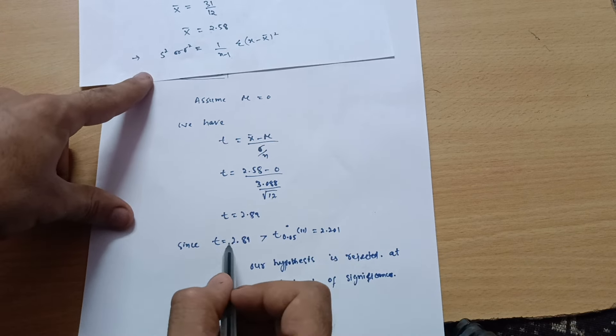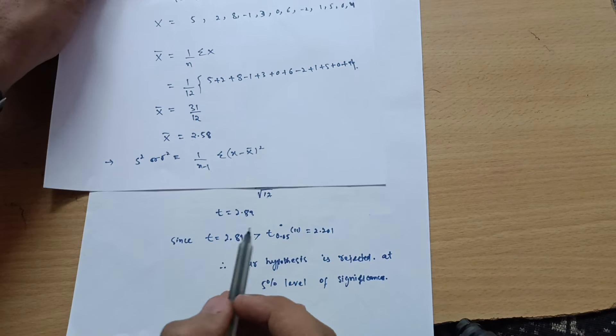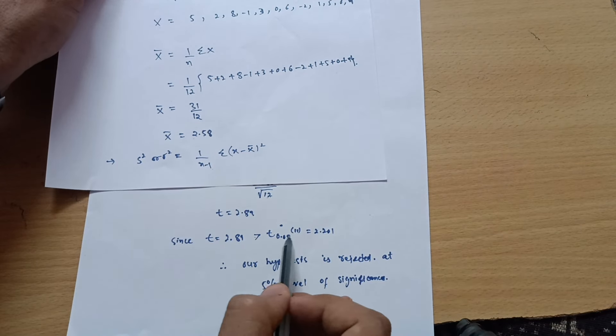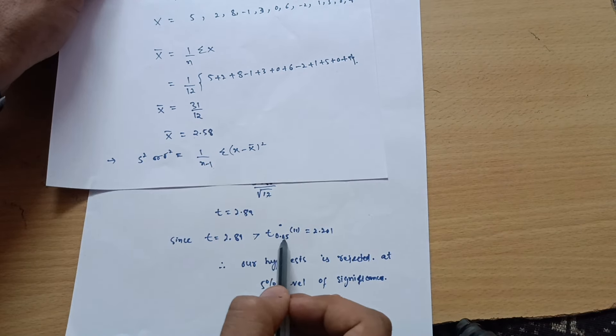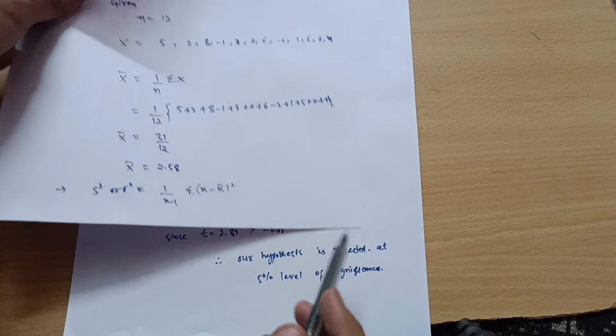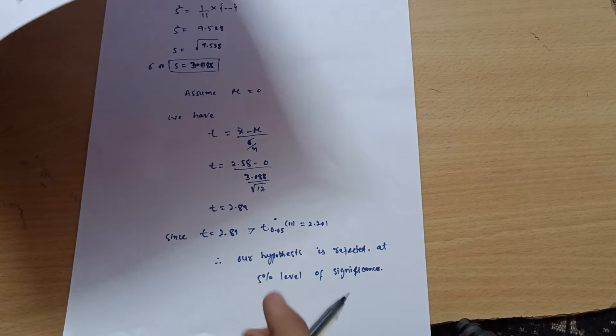Then, since t is equal to 2.89 is greater than the given value—see here, 2.201 was the given value, we are getting 2.89. So, it is greater than this t of 5% level of significance at 11 degree of freedom, it is 2.201. So, it is obviously greater than. Therefore, I can conclude that our hypothesis is rejected at 5% level of significance. As earlier I told you, if we are getting the value more than given value of t, then hypothesis will be rejected. If we are getting less than the given value, your hypothesis will be accepted in that particular case.